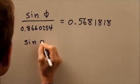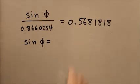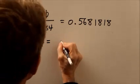That means the sine of phi equals this times that. When we multiply that out, we get 0.49206.